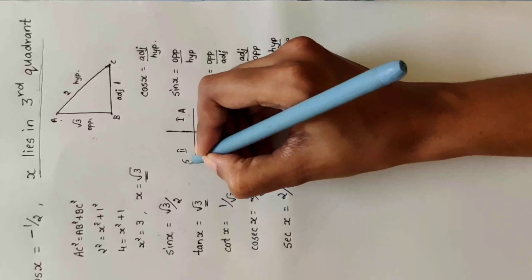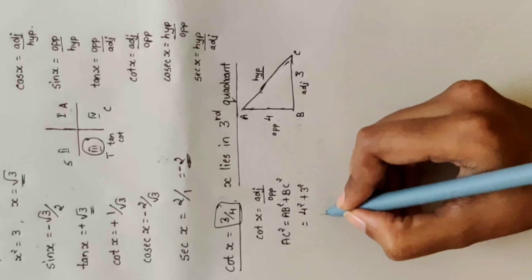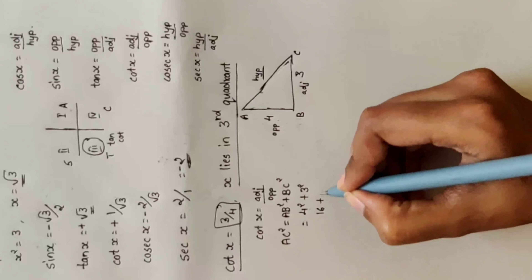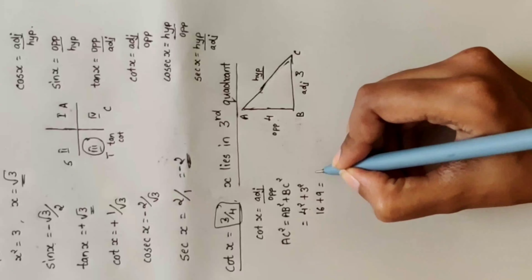AC² = AB² + BC². AC² = 4² + 3² = 16 + 9 = 25. So AC = √25 = 5. The hypotenuse is 5.